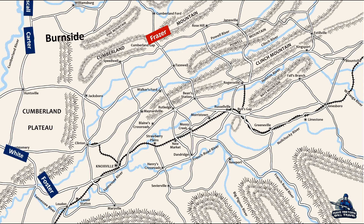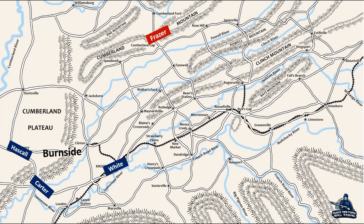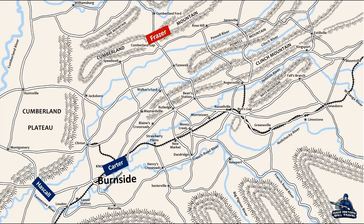Foster made it to Knoxville on September 2, and captured a number of locomotives and train cars. Foster then drove out any Confederate resistance and chased them to the city's outskirts. Burnside and the main army reached Knoxville on September 3, and completed the capture of the city. Before he left for Tennessee, Burnside gave Colonel John de Corsi a brigade of men to act as the far eastern prong of the invasion force, with the objective of capturing Cumberland Gap.